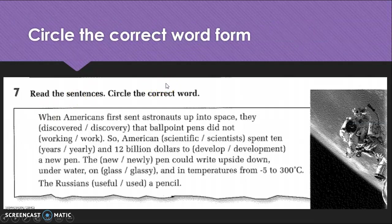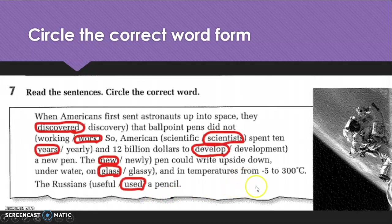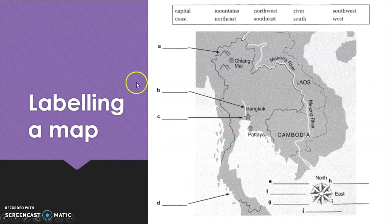I thought this story was great — I thought it was quite funny. There's twelve billion dollars to develop a new pen over ten years, and the Russians just use a pencil. Fantastic. Here are the answers for that. This was good — it fits in well with our labelling maps, and in your workbook you've got some activities regarding labelling diagrams and maps.